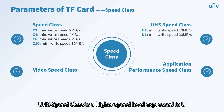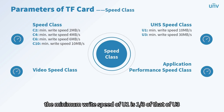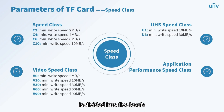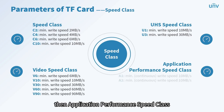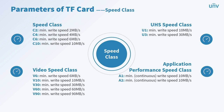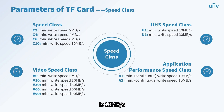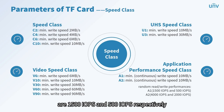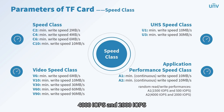UHS Speed Class is a higher speed level expressed as U1 and U3; U1's minimum write speed is one-third that of U3. Video Speed Class, represented by V, is divided into five levels, where the minimum write speed equals the number after the letter V. Application Performance Speed Class includes A1 and A2, standards for mobile phone memory cards, both with a minimum continuous write speed of 10 MB/s. However, A1's random read/write performance is 1500/500 IOPS, while A2 is greatly improved to 4000/2000 IOPS.